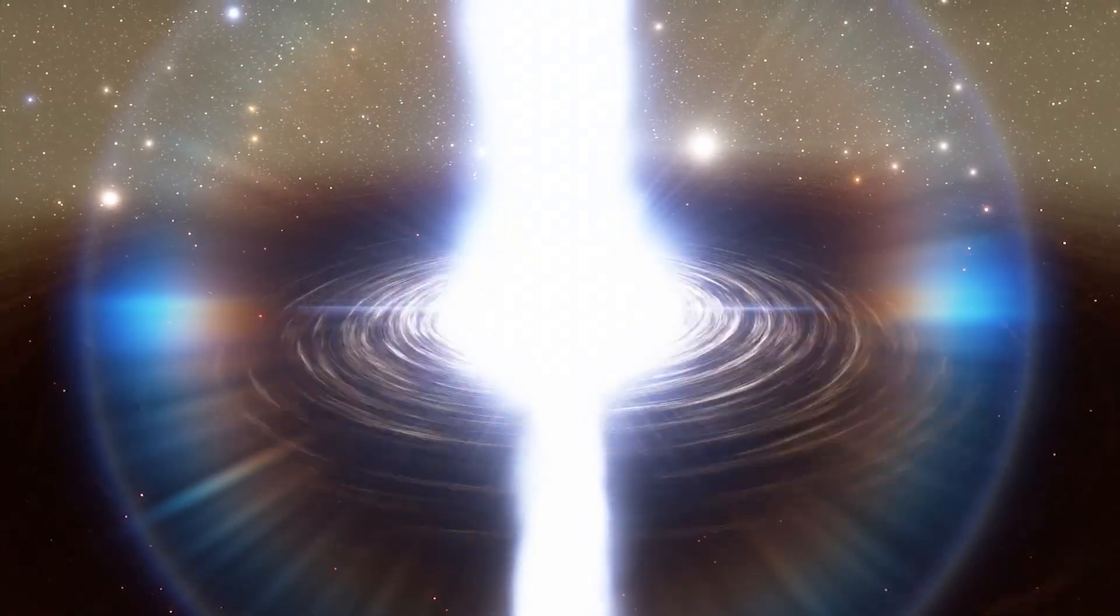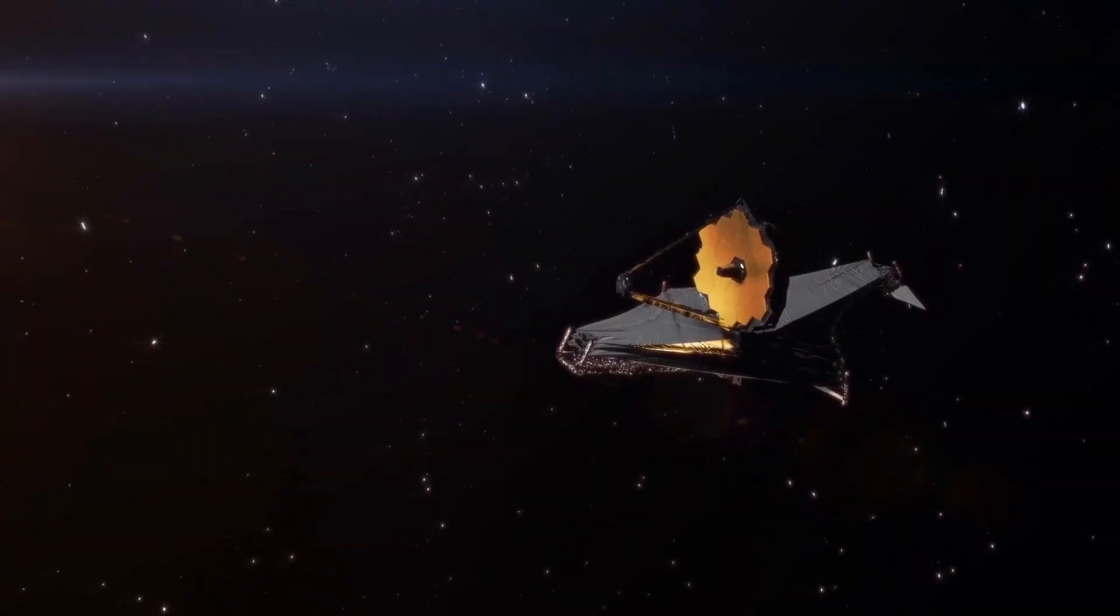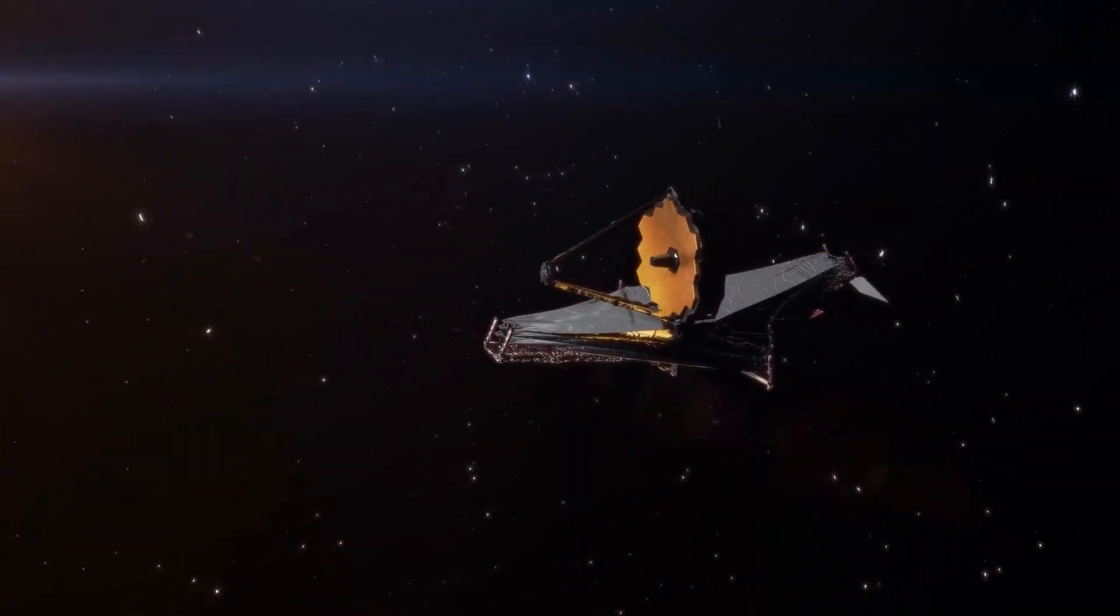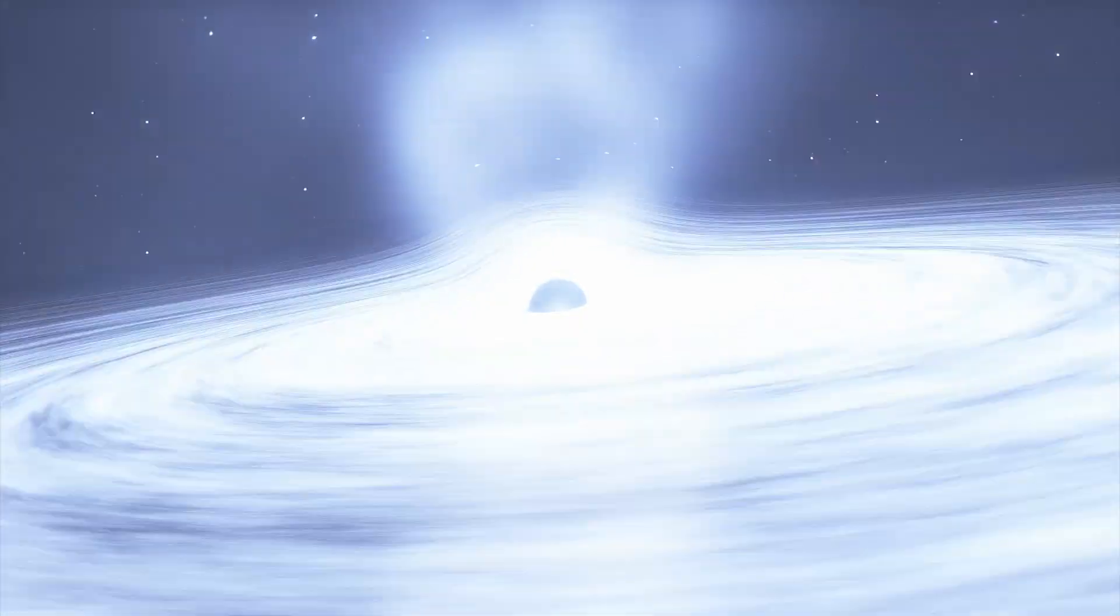Scientists expect that this black hole didn't just form recently. This means that there should be more similar black holes that are younger and existed earlier on in the universe. The JWST allowed NASA astronomers to study the redshift period and they're excited to find more of these black holes.